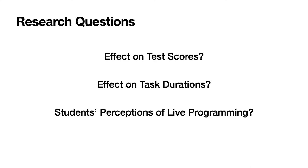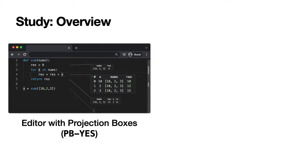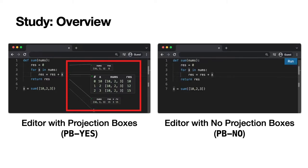We used two programming environments in our study. An online in-browser editor with projection boxes, which we refer to as PBS going forward, where runtime values can be examined inside these boxes. And the exact same online editor with no projection boxes, which we refer to as PBNO, where students examine their code by clicking a run button at the upper right corner of the interface to see an output box showing standard output and/or error.